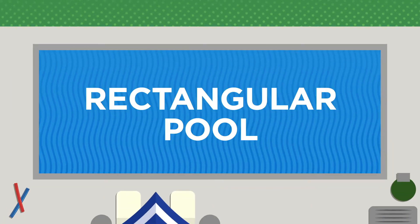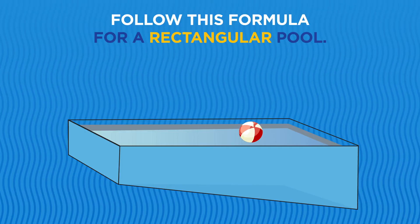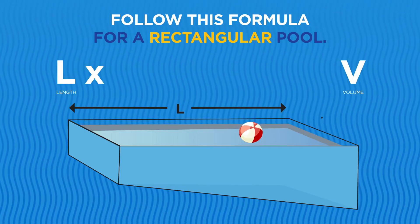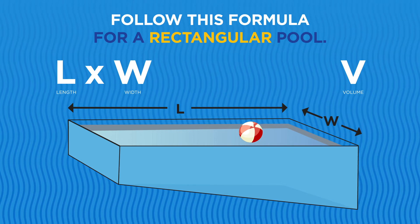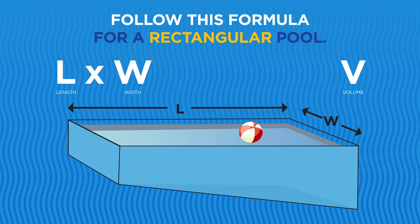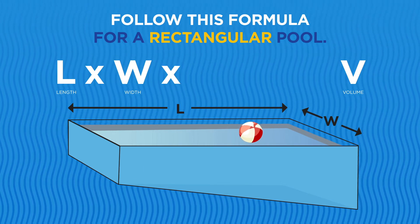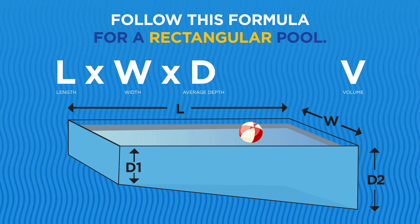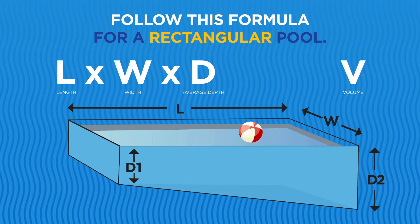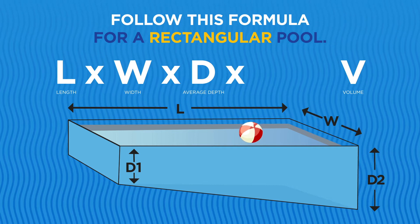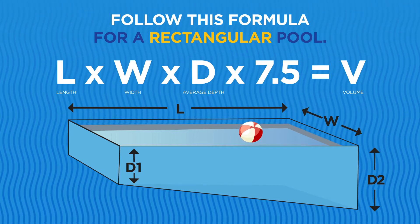For a rectangular pool, multiply the length times the width. Next, multiply that number by the average depth. Finally, multiply by 7.5.